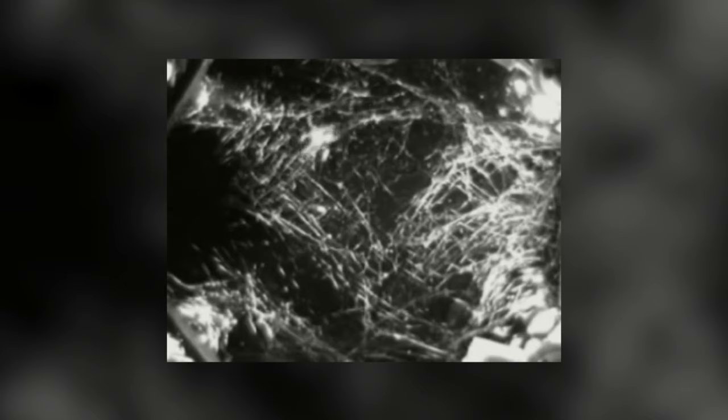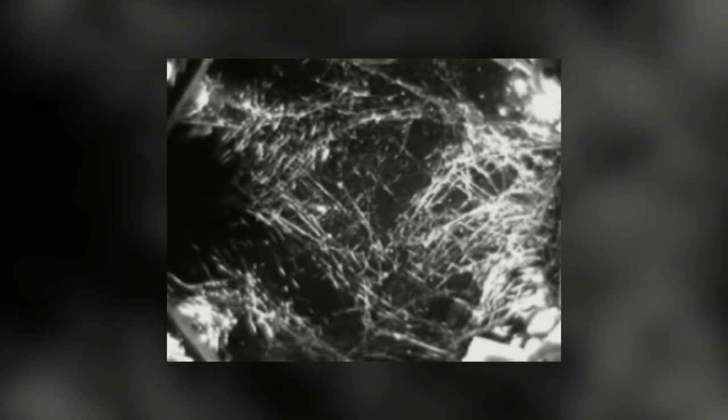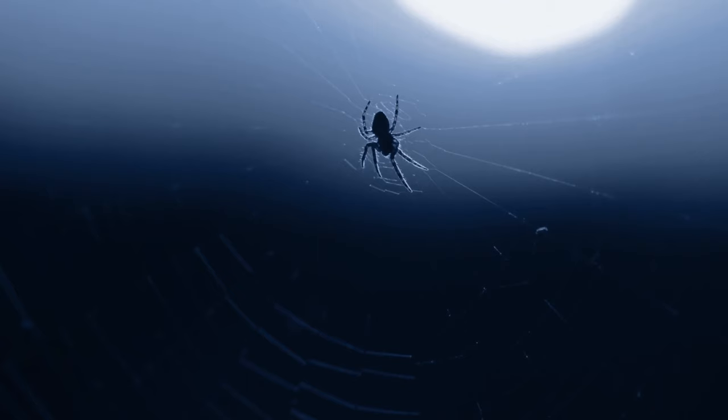When the lights were turned off, the spiders rested in random orientations within their webs. Yet, with the lights on, they would orient themselves away from the light source, which meant downward. Hence, in the absence of gravity, light assisted them in orientation.